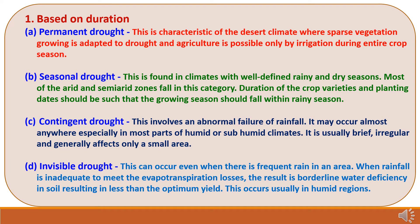Classification of drought based on duration. First is permanent drought. This is characteristic of the desert climate where sparse vegetation growing is adapted to drought, and agriculture is possible only by irrigation during the entire crop season. Second is seasonal drought. This is found in climates with well-defined rainy and dry seasons. Most of the arid and semi-arid zones fall in this category. Duration of crop varieties and planting dates should be such that the growing season falls within the rainy season.